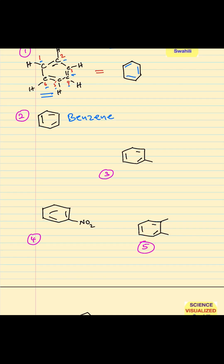Here we see an example where you have a benzene ring, like what we saw before, but now you have a side group. This side group is a CH3, so that's a methyl group. The name for this structure becomes methylbenzene. It's also called toluene.